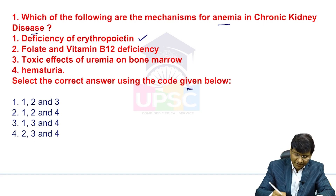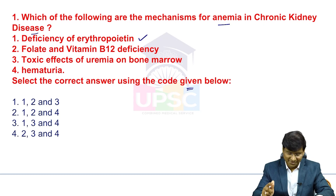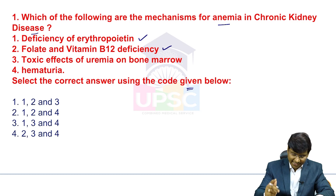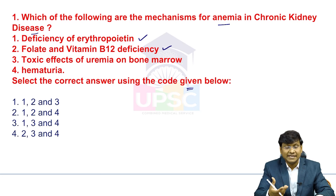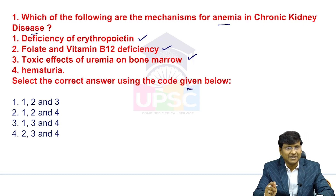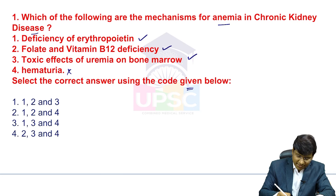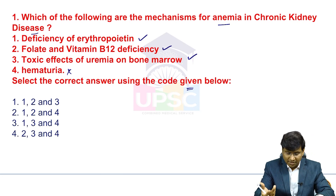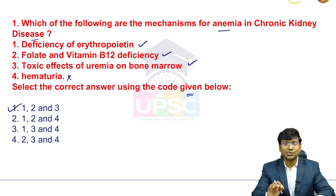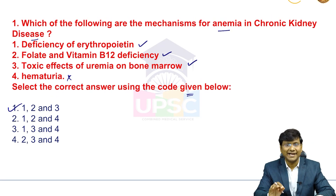Deficiency of erythropoietin will definitely cause anemia in chronic kidney disease. Folate and vitamin B12 deficiency will also contribute to the development of anemia. Patients with chronic renal failure have increased urea and creatinine levels, so there will be toxic effects of uremia on the bone marrow. However, hematuria causing anemia in chronic kidney disease is an incorrect statement. The correct answer is 1, 2, and 3.